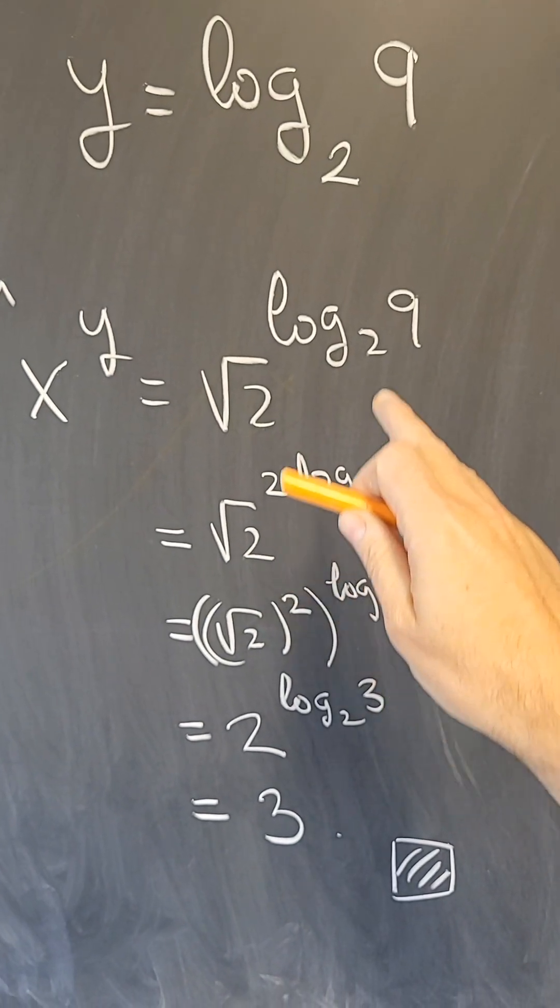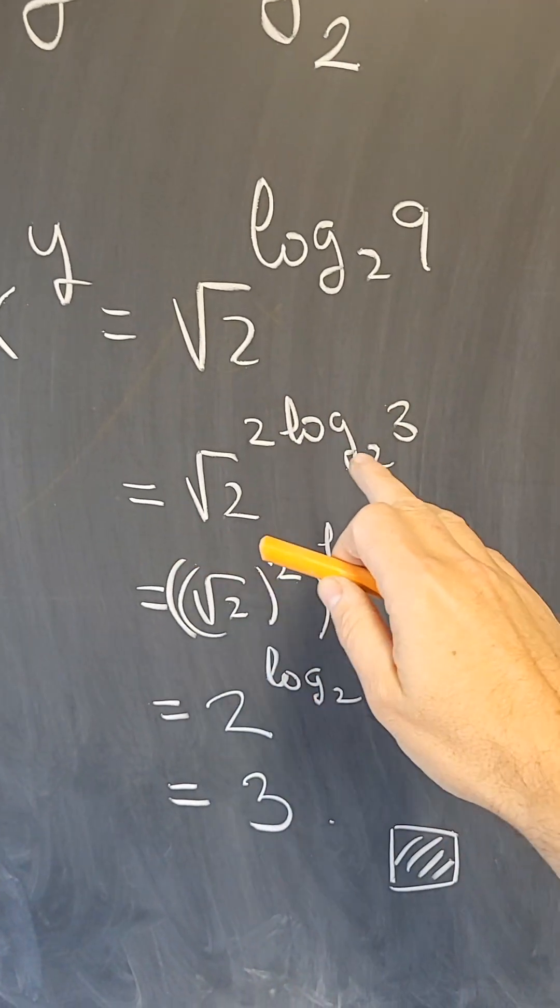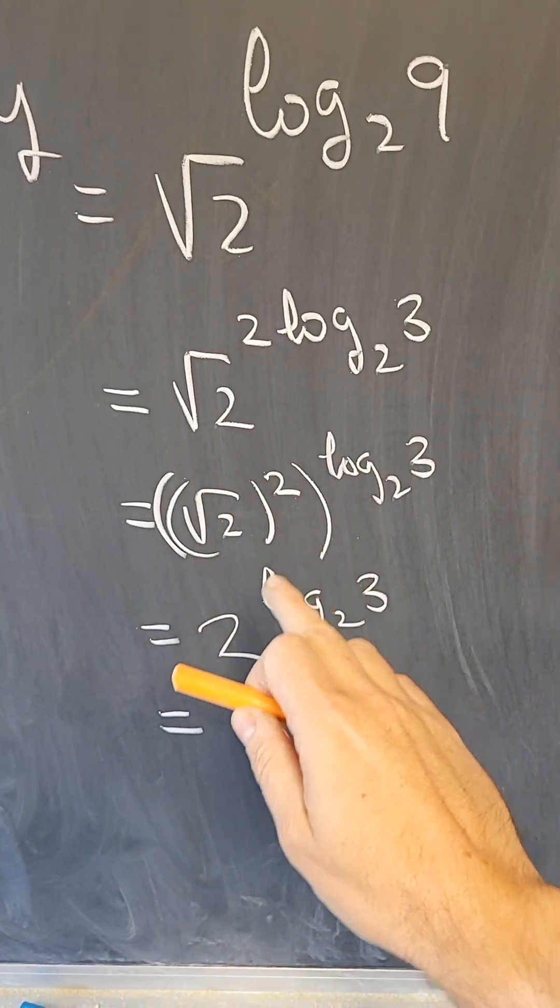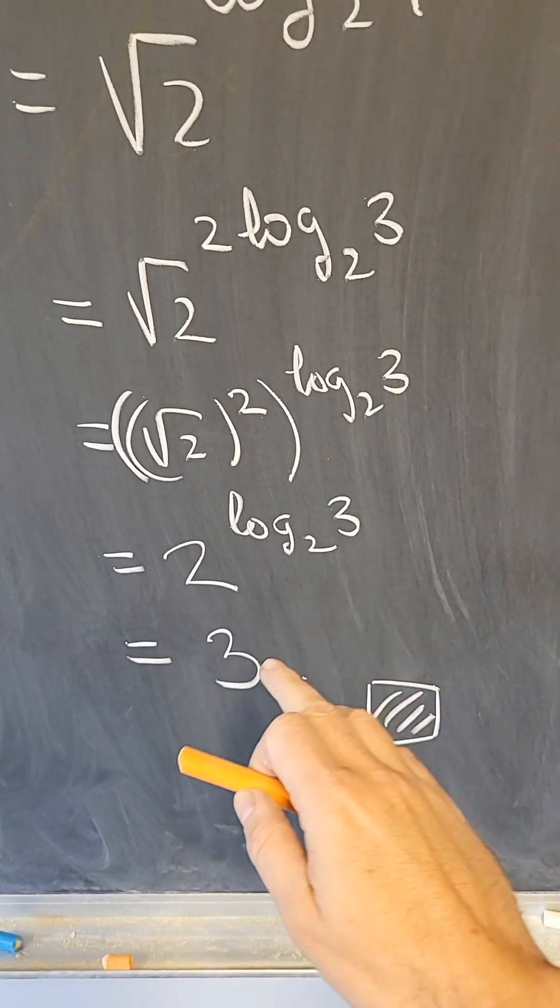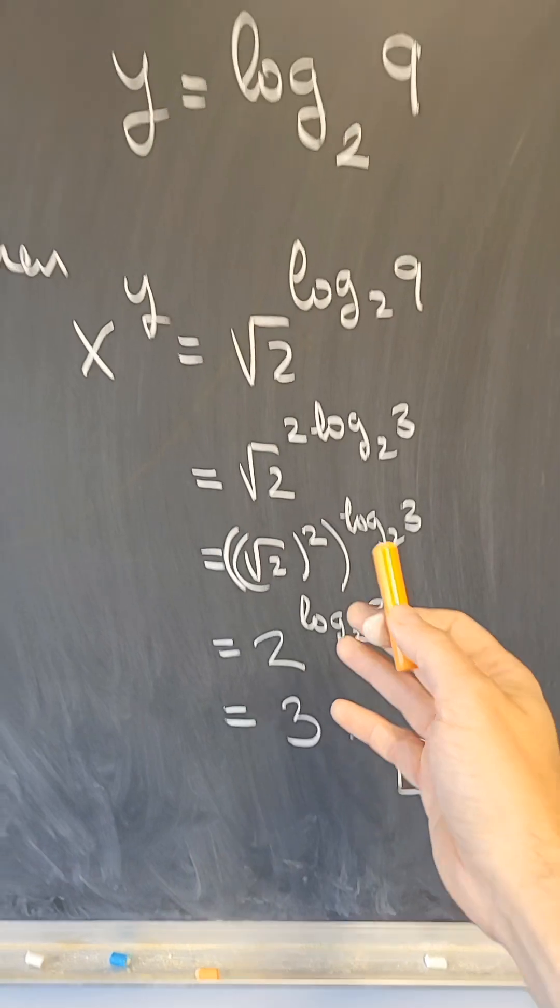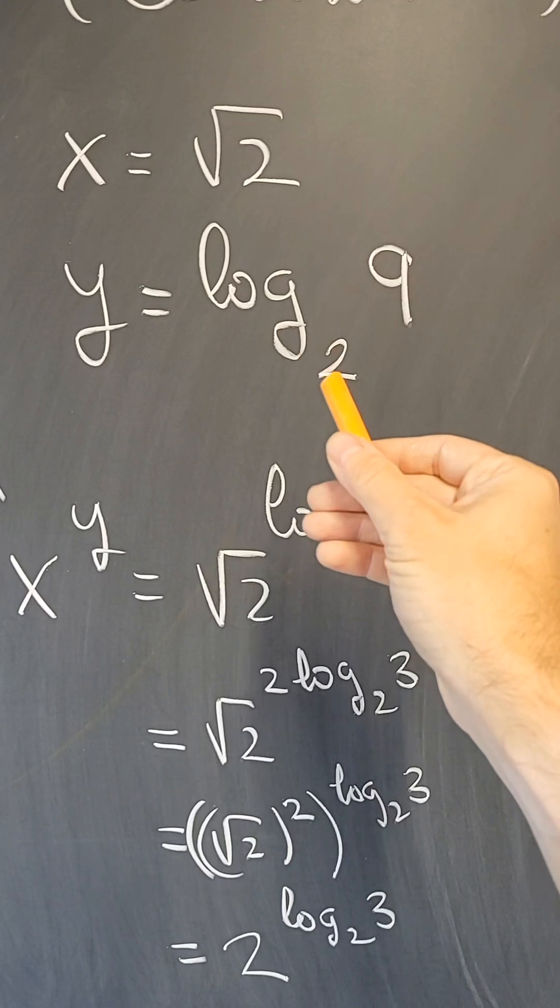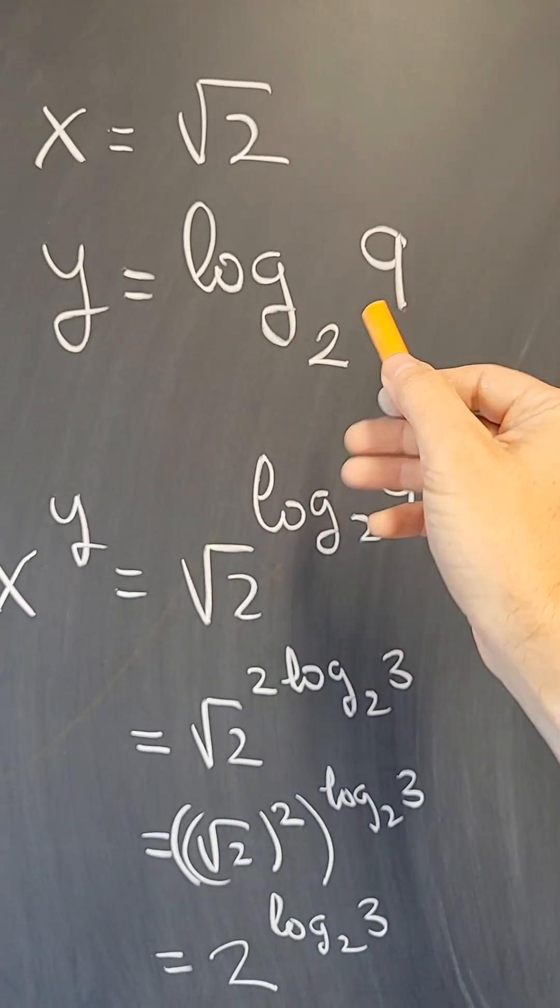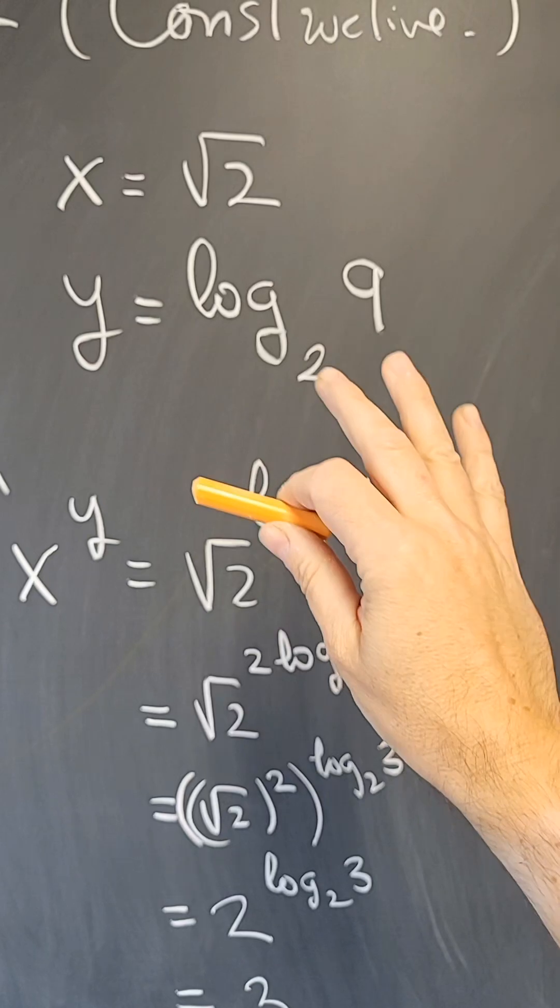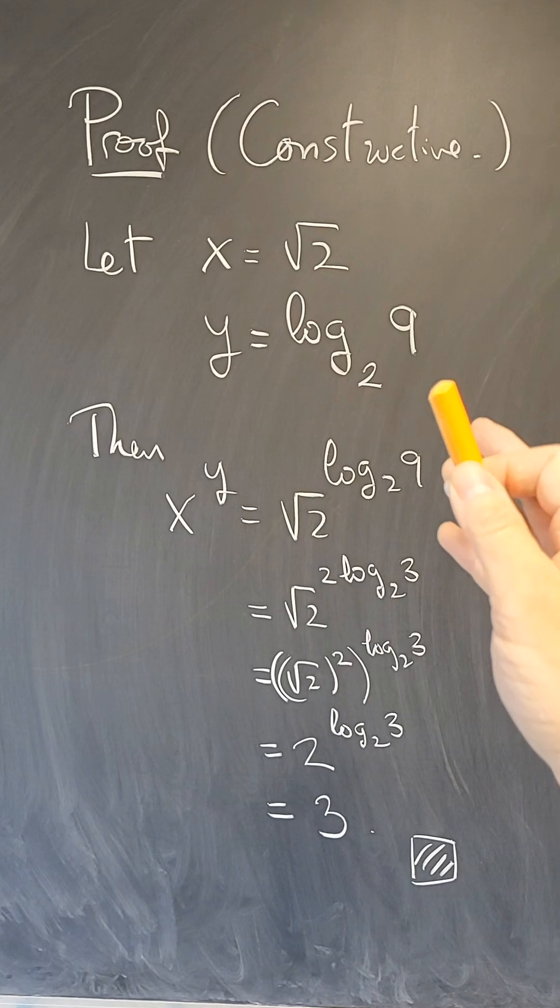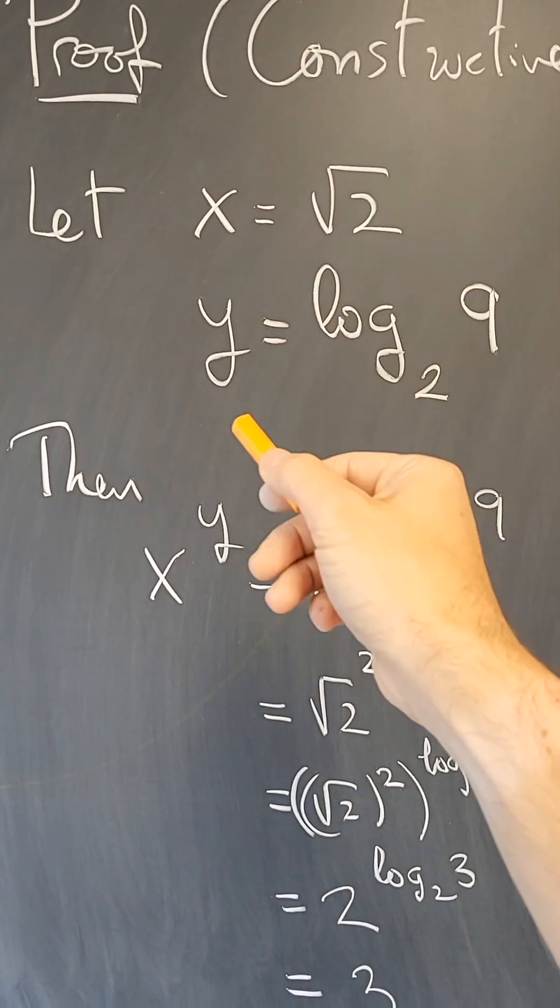Because when you do the algebra of x to the y, using the fact that log 2 of 9 is twice the log 2 of 3, that simplifies this to be just 2 to the log 2 of 3, which is 3, which is rational. And all you have to show is that the square root of 2 is irrational and the log in base 2 of 9 is also irrational, which is not hard to prove. I will leave that as an exercise. But that's a much simpler proof of that theorem.